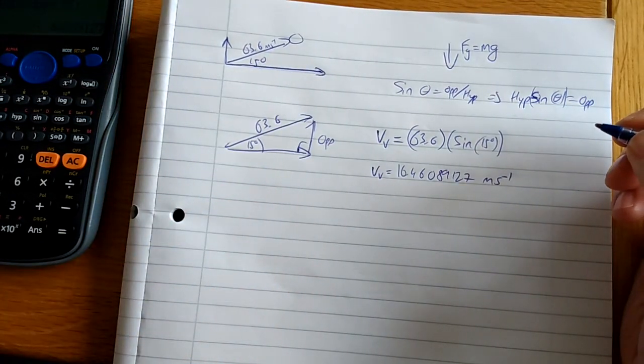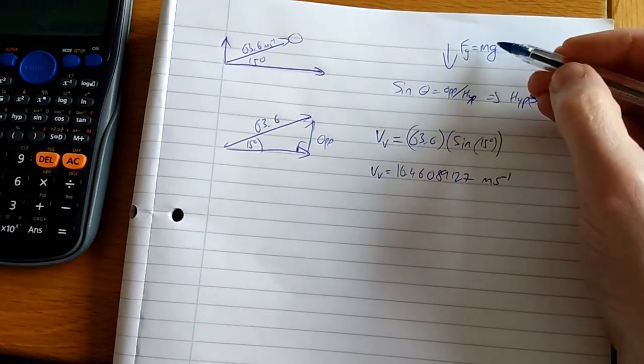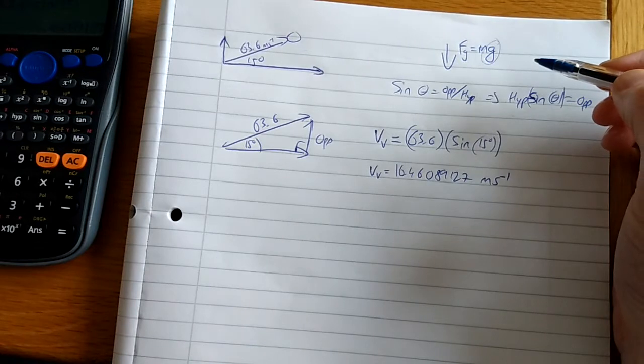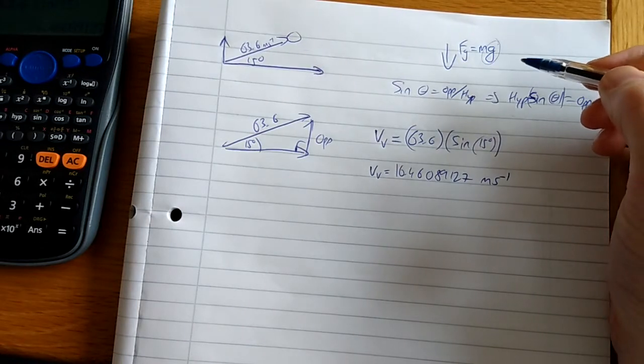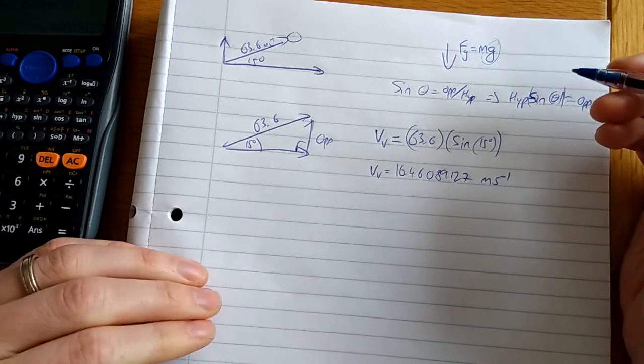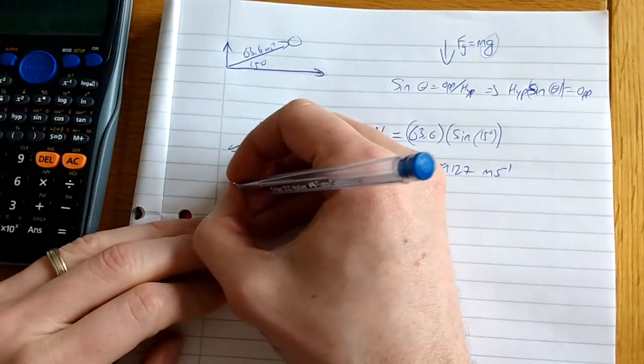What's going to stop it going back down? Gravity. Actually, I don't need the force of gravity - all I need is g, the acceleration due to gravity. We're going to be using one of our linear equations, our UVAST equations. What do I know? I know my velocity.